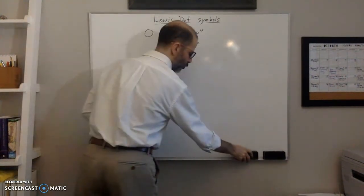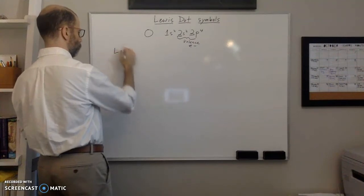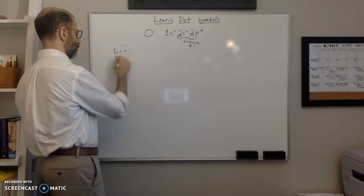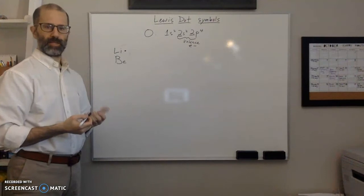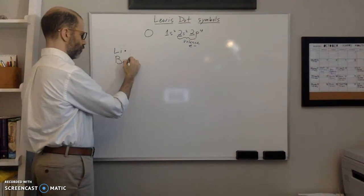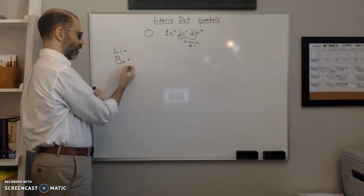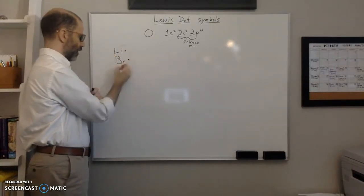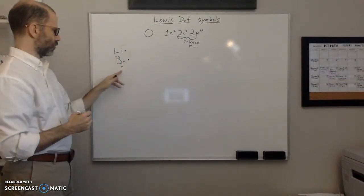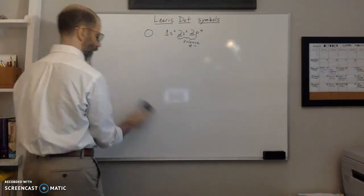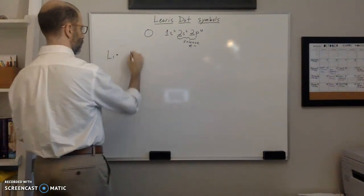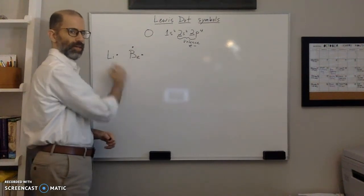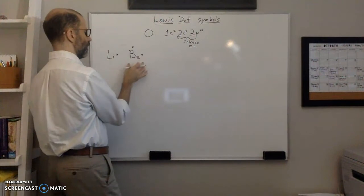Lithium also has one valence electron, so lithium would have only one dot around it. Beryllium has two valence electrons. You start anywhere — top, right, or bottom — and go around adding one electron to each side, only one at a time. So starting at the top and going clockwise, you place one dot on top and one on the next side. That's beryllium with its two valence electrons.